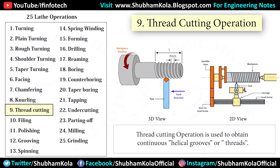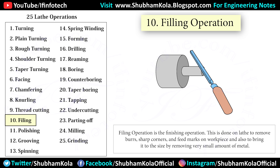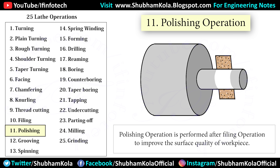The motion of the carriage is provided by a lead screw, and a pair of change gears drives the lead screw. By rotating the handle, depth of cut can be controlled. Filing is a finishing operation performed after turning to remove burrs, sharp corners, and feed marks from the workpiece, and also to bring it to size by removing a small amount of metal. The operation consists of passing a flat single-cut file over the workpiece, which revolves at high speed — twice that of the turning process. Polishing is performed after filing to improve surface quality.